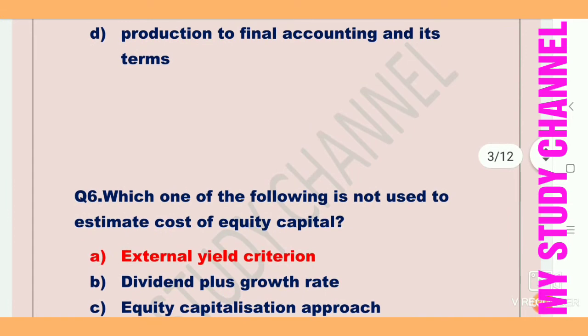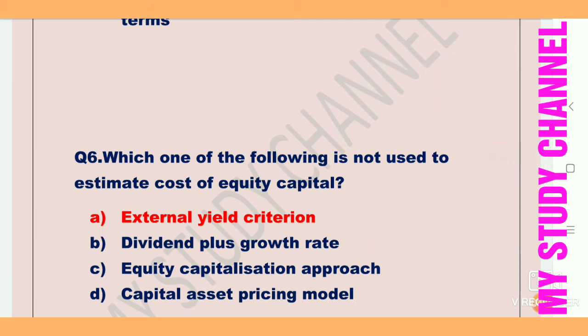Next question: which one of the following is not used to estimate cost of equity capital? Option A is external yield criterion, B is dividend plus growth rate, C is equity capitalization approach, and D is capital asset pricing model. Option A is the right answer — external yield criterion is not used to estimate cost of equity capital.